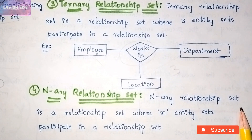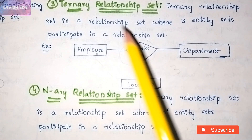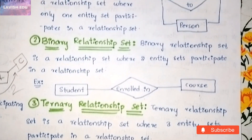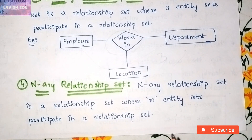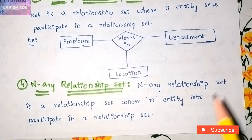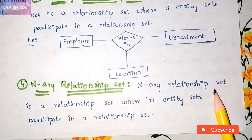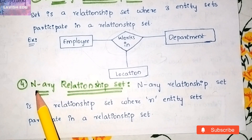An n-ary relationship set is one where n entity sets participate in a relationship set. As we have seen: one entity in unary, two in binary, three in ternary — we can extend this to n number of entities. Any relationship set with more than three participating entities can be represented as an n-ary relationship set.